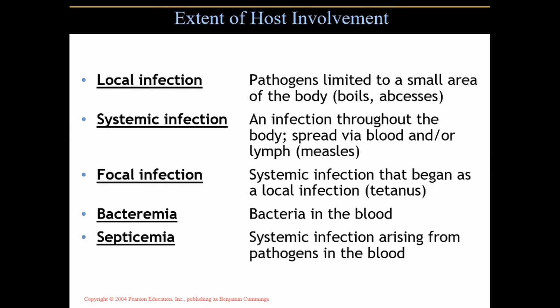A local infection is limited to a small area of the body, like boils and abscesses — just localized infections where something swells up and may have pus as well. Systemic infections spread throughout the body or an entire system — that's why it's called systemic — spreading via the blood and lymph through both the circulatory and lymphatic systems.